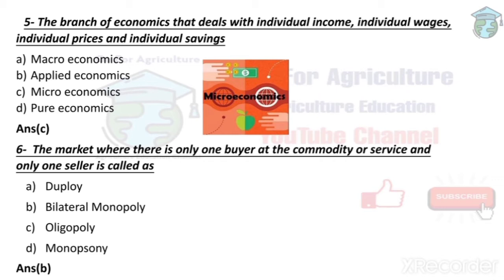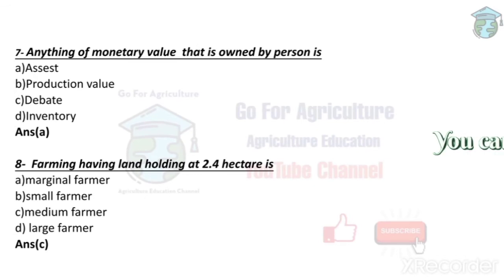The market where there is only one buyer and only one seller is called bilateral monopoly. If there is only one seller, it is monopoly. Two sellers is duopoly. More than two is oligopoly. Monopsony means only one buyer with many sellers. In this question, since there is only one buyer and one seller, the answer is bilateral monopoly. If no information about the buyer is given, the answer would simply be monopoly.